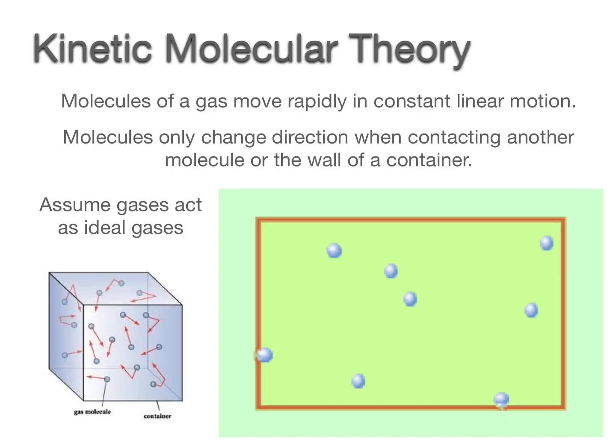We need to begin by starting to think about how gas particles behave in a sample of gas. This is what is known as the kinetic molecular theory. There are a couple of assumptions that we need to consider when talking about gases, and these assumptions help us make for easier and less complicated math. Molecules of a gas move rapidly and in constant linear motion. They're not curving, they're going straight. They may collide and bounce off of each other, maybe the walls of the container that they're in, but they always travel in a straight line or linear fashion.